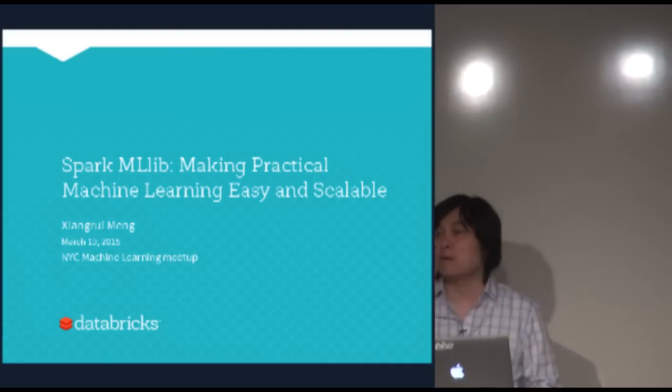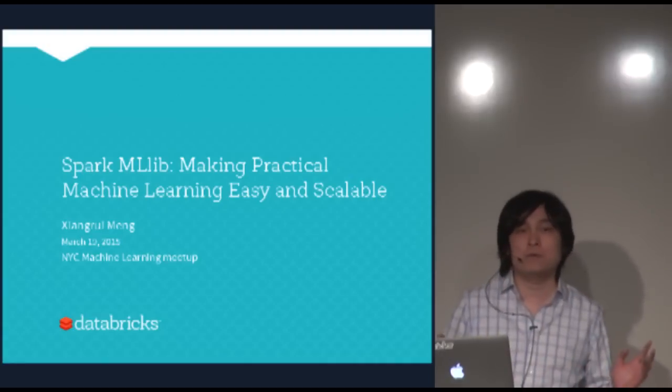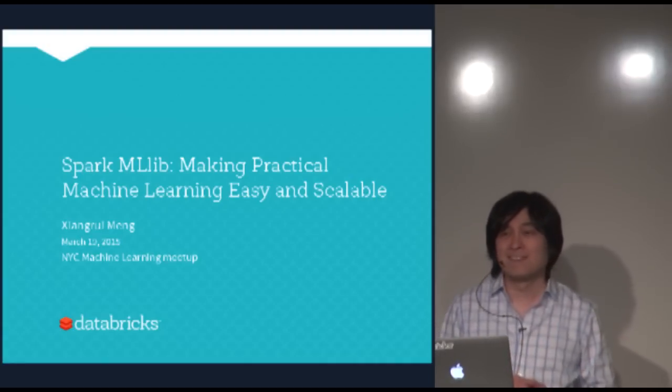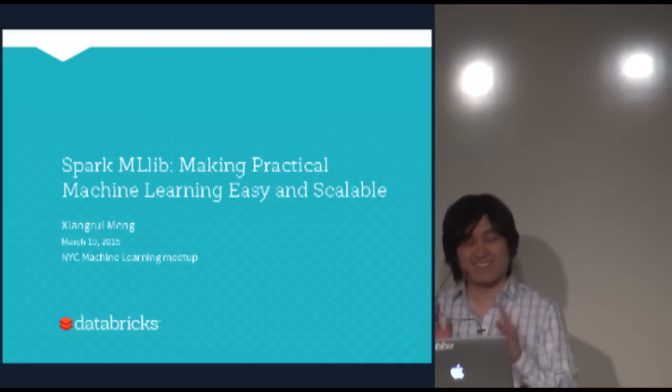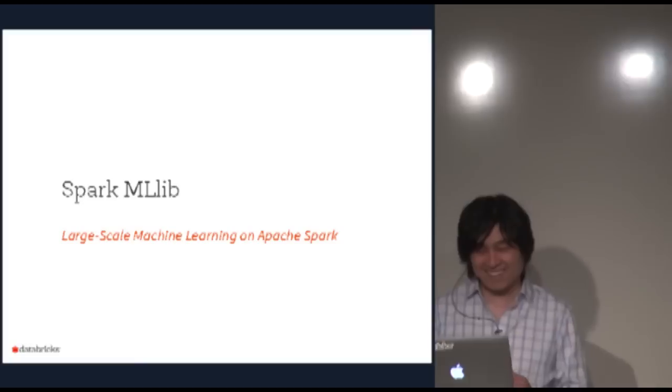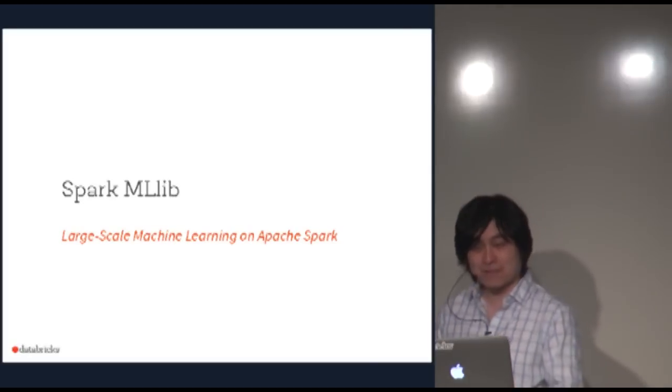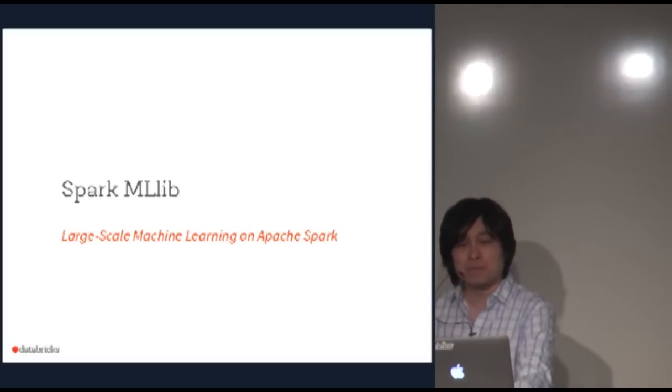And how many of you know alternating least squares? Let's start with MLlib.